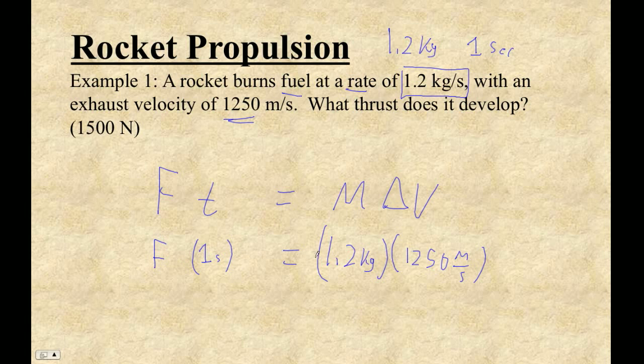So force times time is mass change in velocity. So I just go this times this divided by this. But if that's always one, isn't it just, anyway, you'll figure it out. 1.2 times 1,250. And then I've got to divide by one. I divide it by one. Oh, it's still 1,500. So the force ends up being 1,500 newtons. And this is the thrust of the engine.